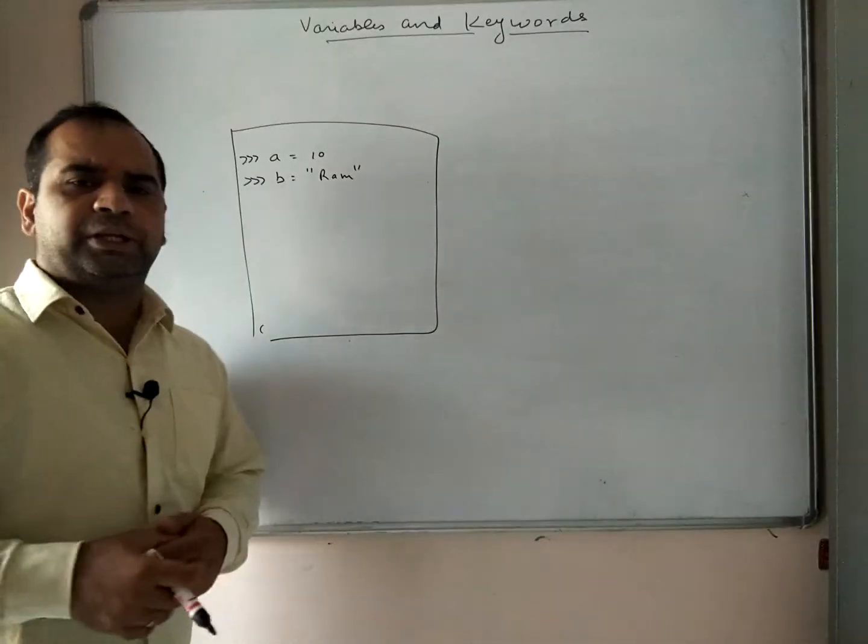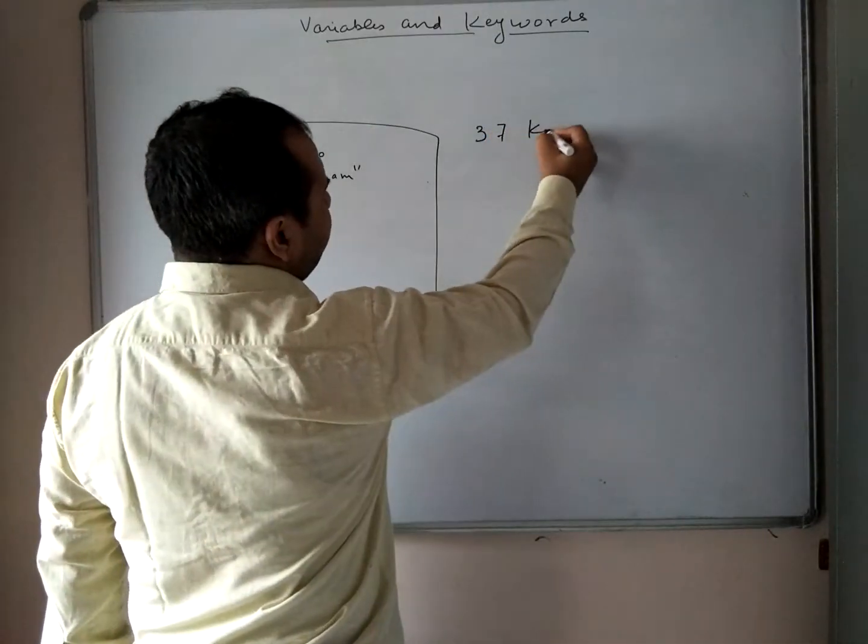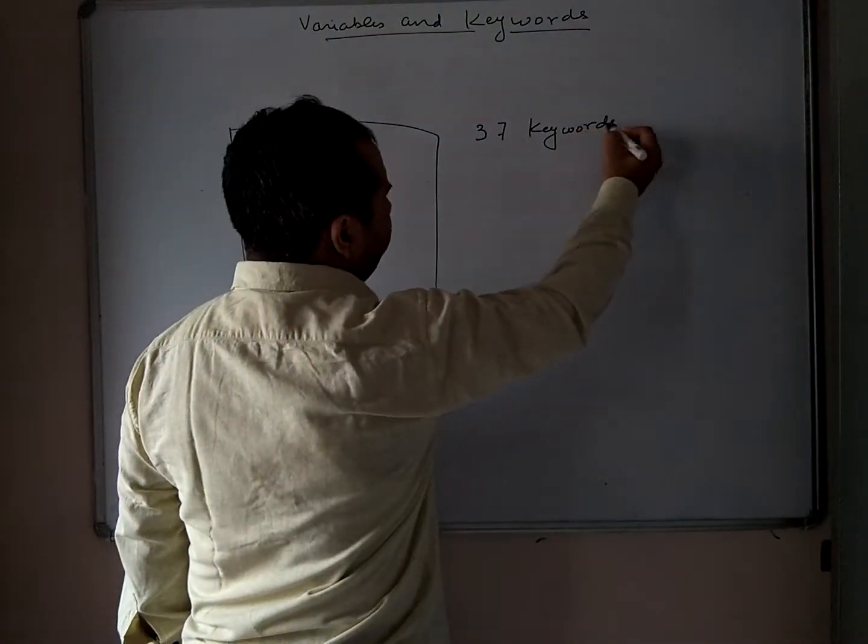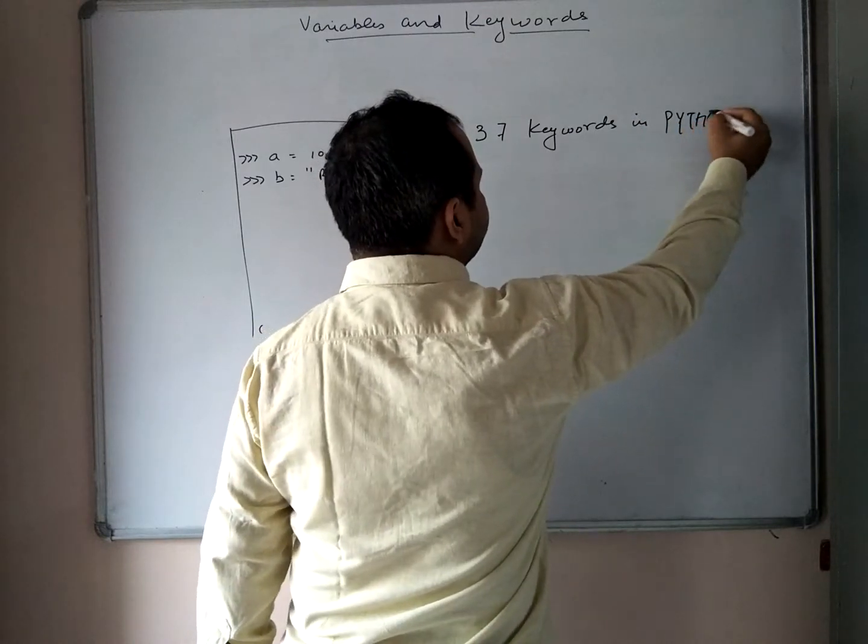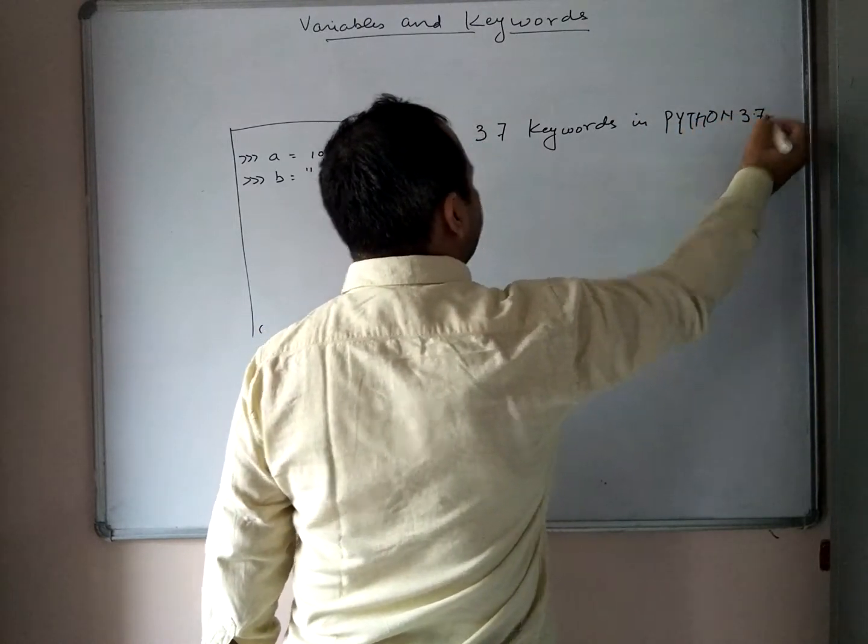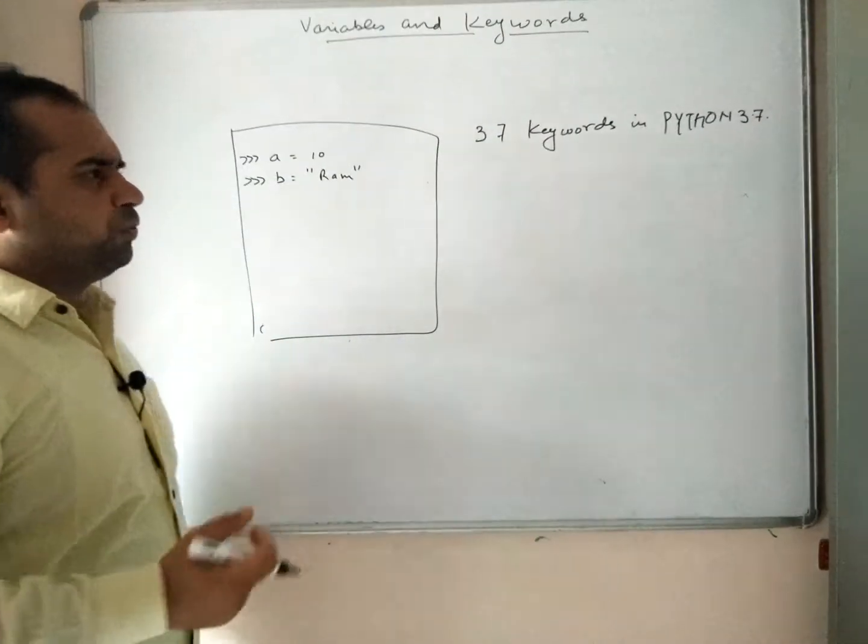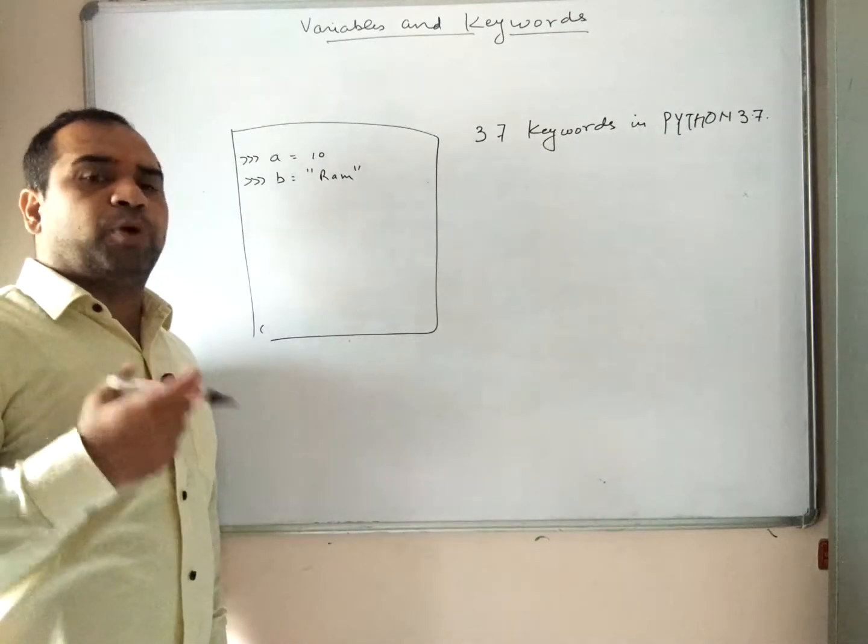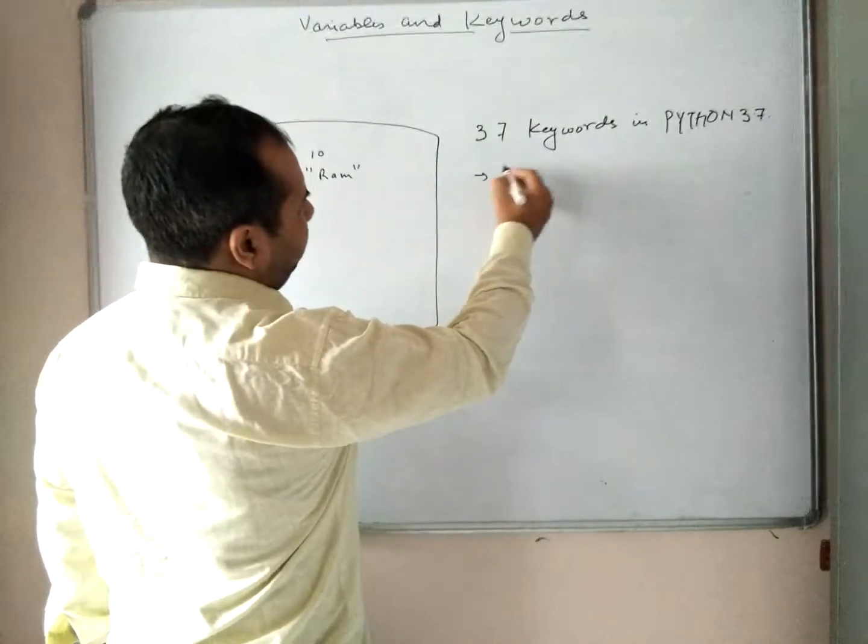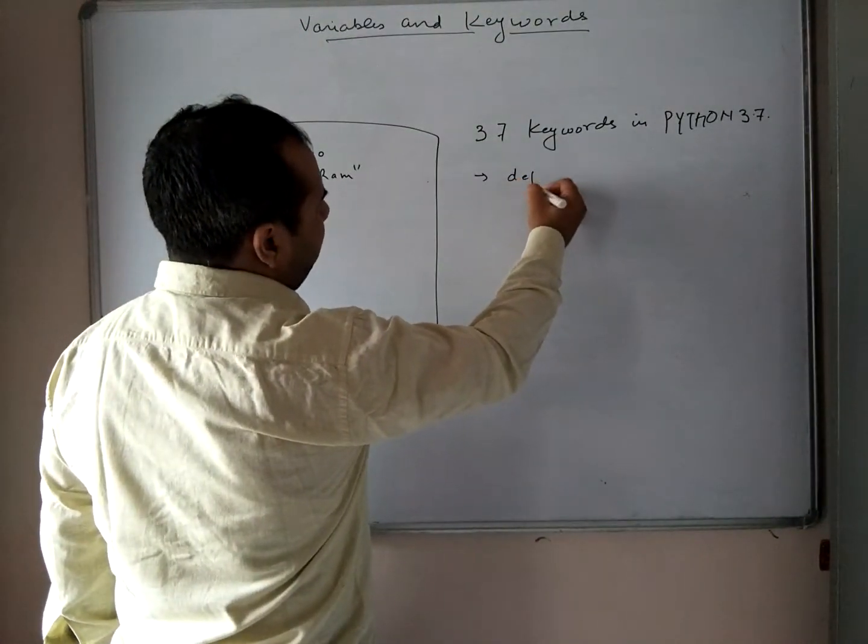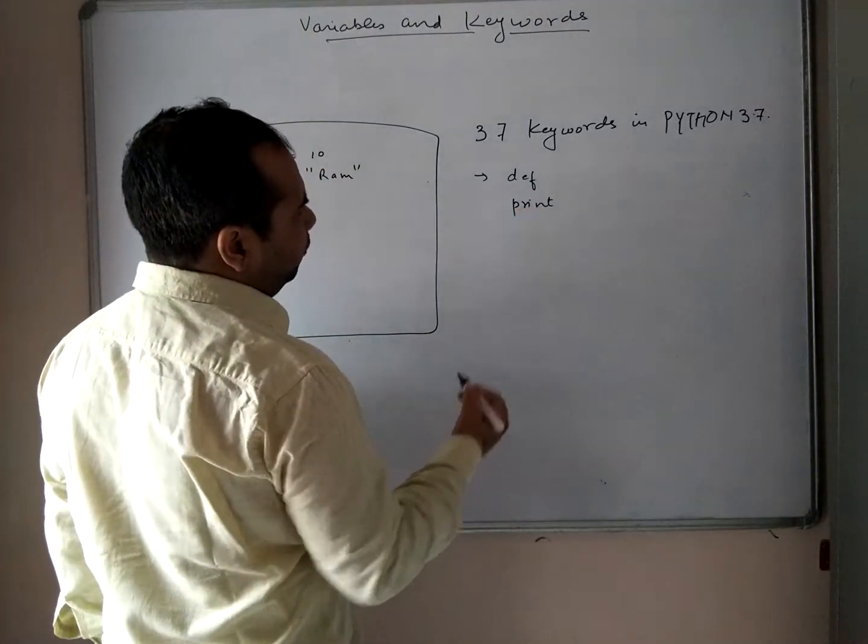Now let's talk about keywords. There are 37 keywords in Python 3.7 version. What are keywords? Keywords are those words which we cannot change or modify, they have to be written as is. Some of them are as follows: def, print, if, while, for.